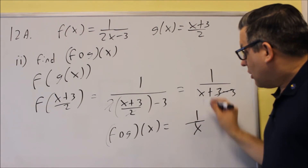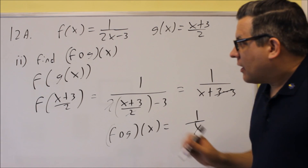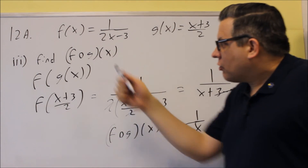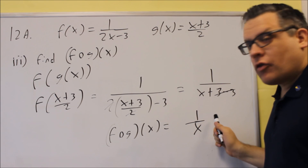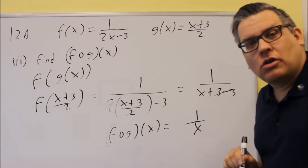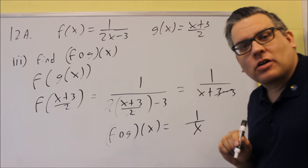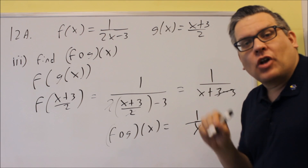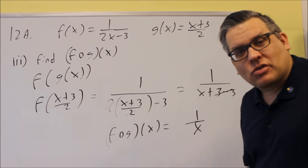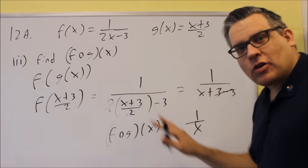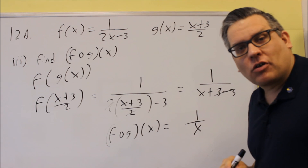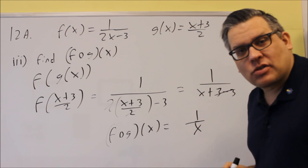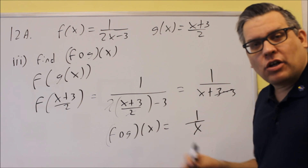So f of g of x equals 1 over x — that's the final answer for part iii. Now notice: if you go back to part i, it originally asked us to find f of g of 0, and we showed that was undefined. Well, if we had found f of g of x first and then plugged in 0, we'd also get something undefined. So you could actually do that problem either way.